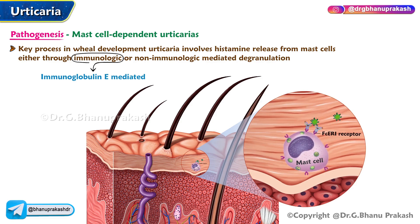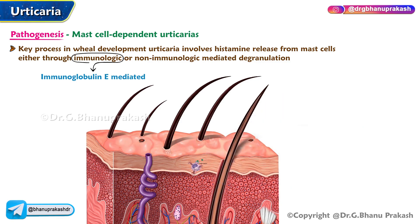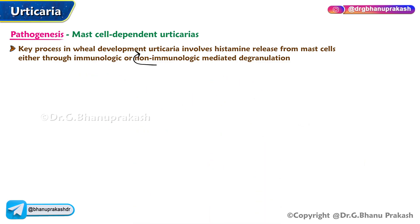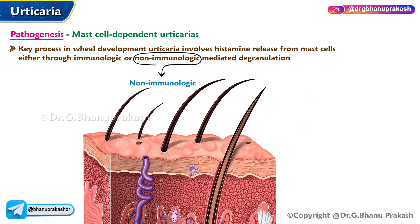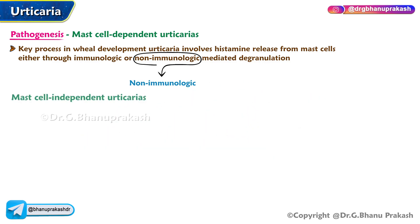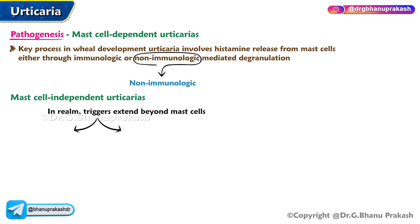This provokes the release of histamine from mast cells, leading to itching and increased capillary permeability, manifesting as wheals. In non-immunologic urticaria, drugs or chemicals directly cause degranulation of mast cells, producing urticaria. Mast cell-independent urticarias involve triggers beyond mast cells and can be immunologic or non-immunologic.